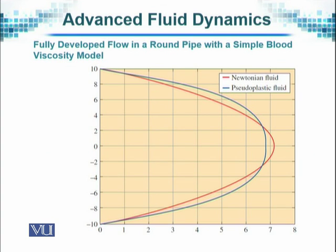If we draw a diagram for the velocity profile obtained, we see that for a Newtonian fluid it flows as shown by the red line, which is quite parabolic in nature and behavior.